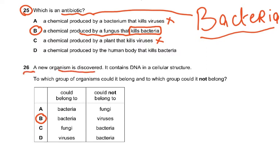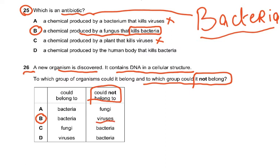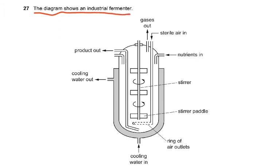Question 26: a new organism is discovered that contains DNA in a cellular structure. To which group could it belong and to which could it not belong? It could NOT belong to viruses — viruses are non-cellular. A cell must have a cell membrane, cytoplasm, and organelles; a virus has none of these. It COULD belong to bacteria, because bacteria have a cellular structure and contain DNA.